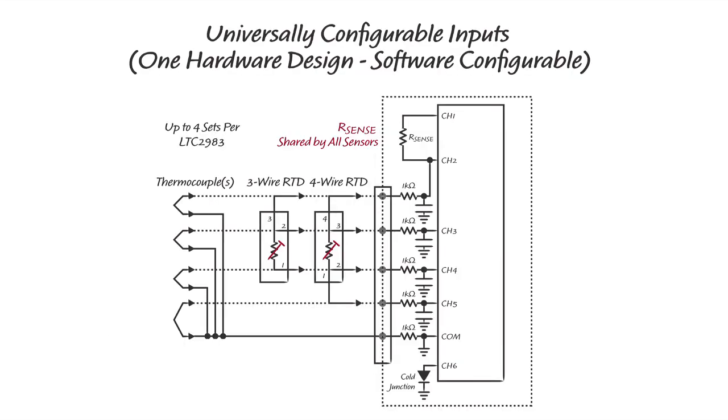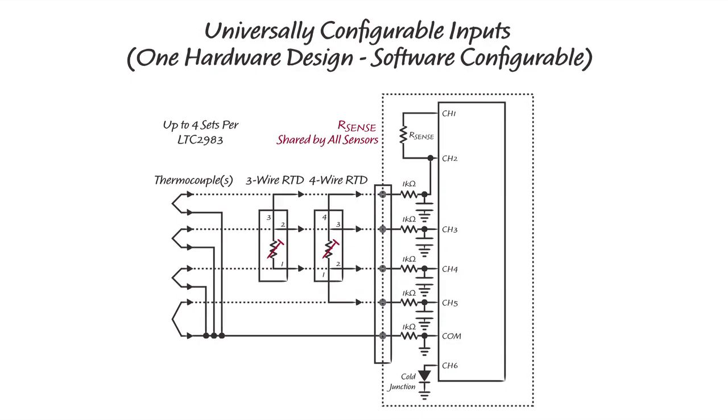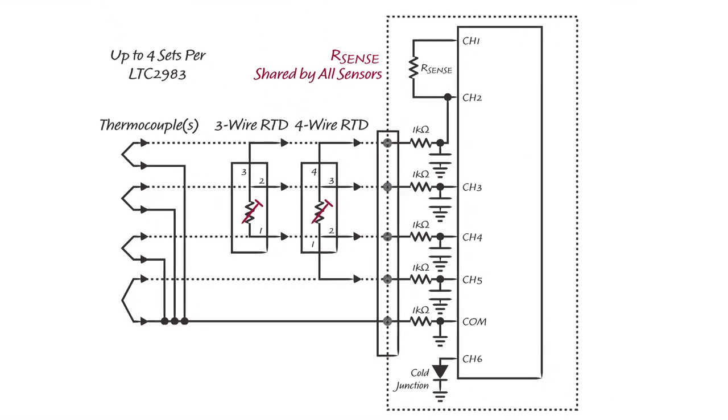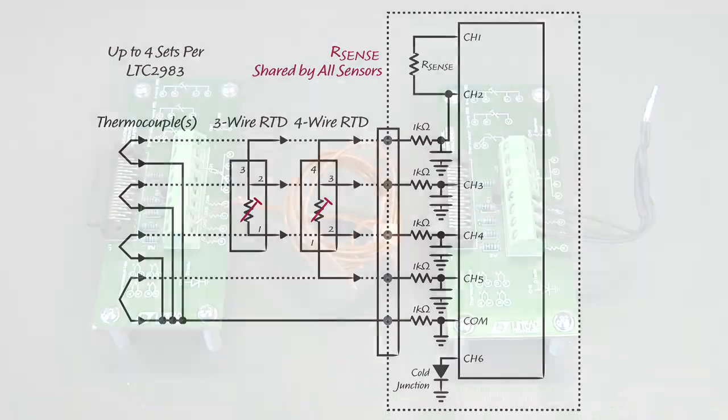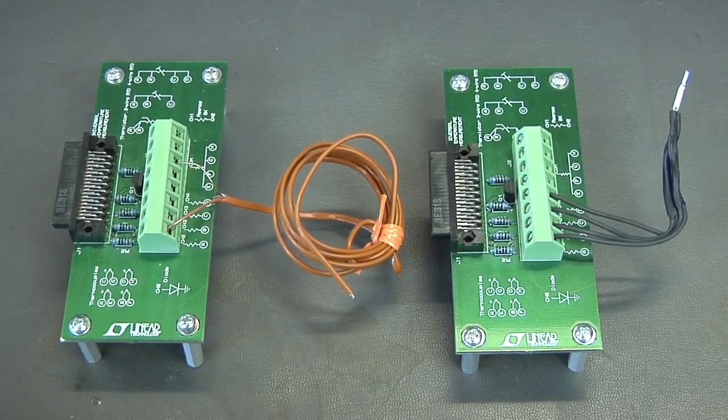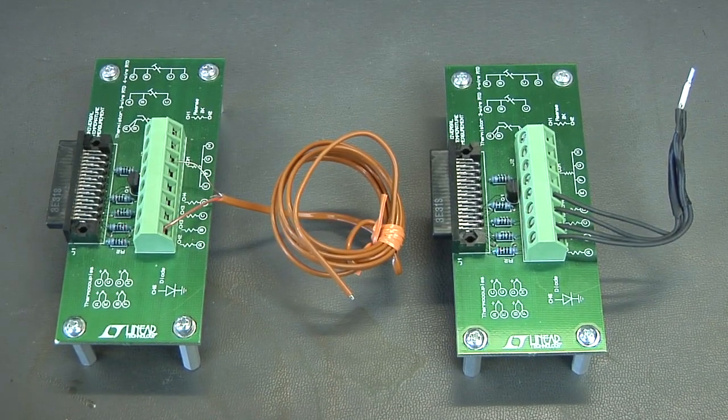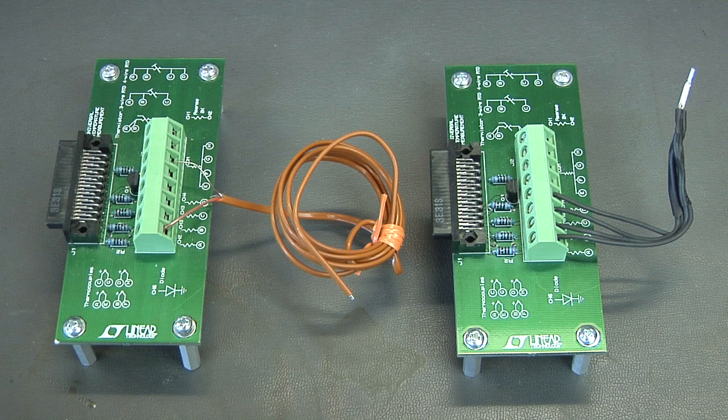In addition to digitizing RTDs, the LTC2983 can also measure the temperature of thermocouples and thermistors. The LTC2983's 20 inputs can be software configured to digitize any of these types of sensors. This allows one hardware design to be shared across many sensor types. The universal demonstration board includes a terminal block for directly interfacing to RTDs, thermocouples and thermistors.